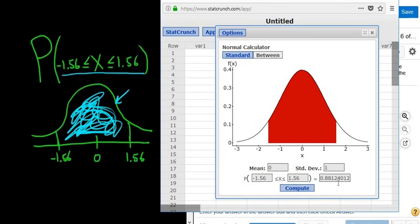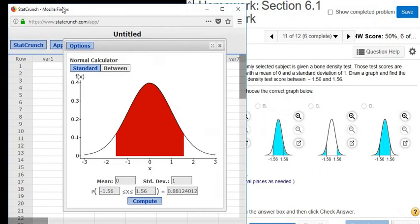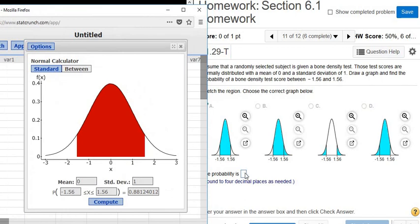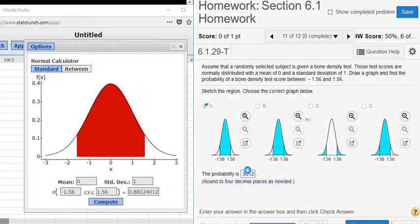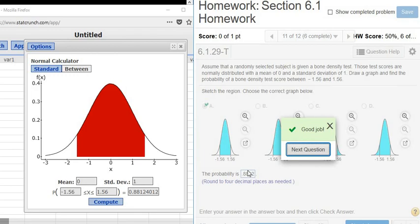You click Compute, and you see that it matches our picture. So 0.8812 is the area or probability. 0.8812. Let's try it. And that's it.